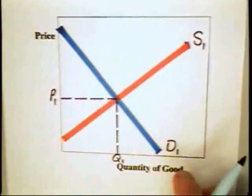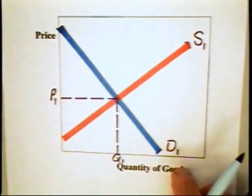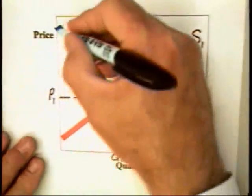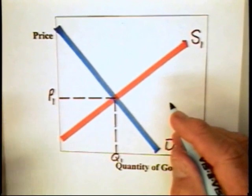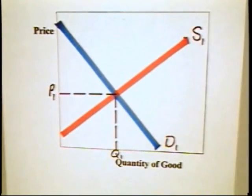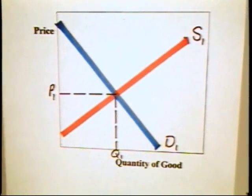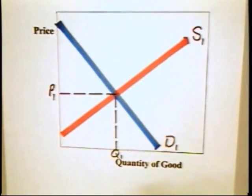Now suppose that the demand curve reflected here does not capture all of the benefits of production — all of the benefits from using the good.